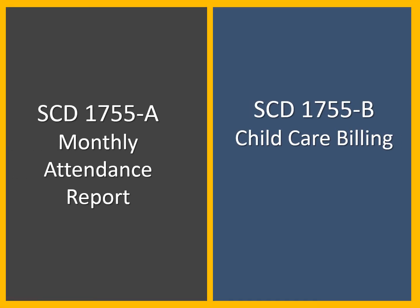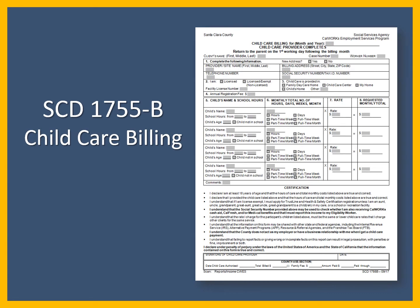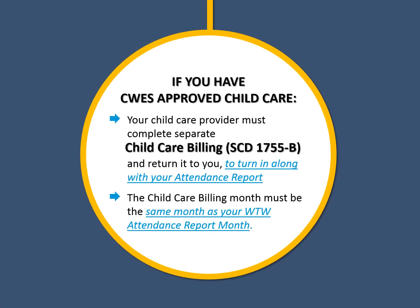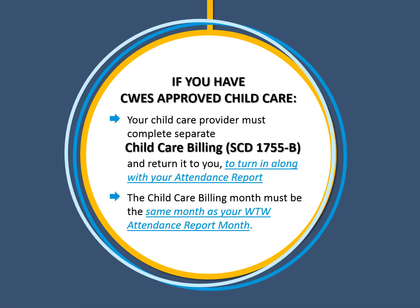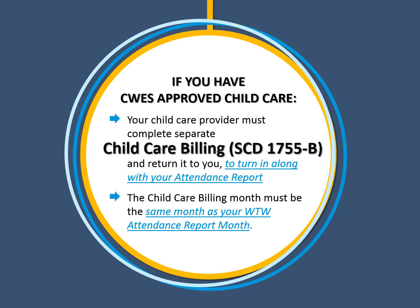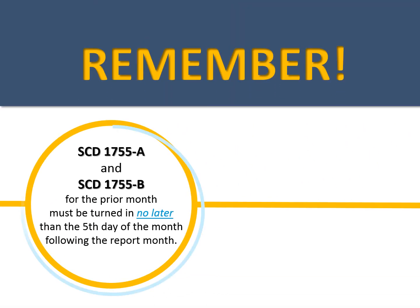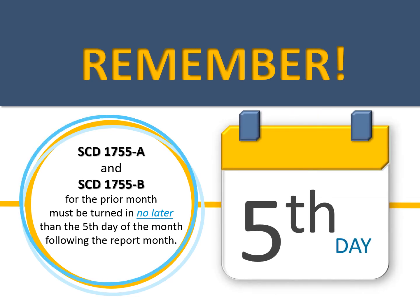Participants who have CalWORKs approved child care must also return a completed child care billing form. The child care billing form is the SED 1755-B. If your child care is approved through CalWORKs, your child care provider must complete a monthly child care billing form. Ask your child care provider to return the completed form to you to turn in along with your attendance report. The child care billing month must be the same month as your attendance report month. Remember, your attendance and child care billing forms must be returned to your employment counselor no later than the fifth day of the month following the report month.